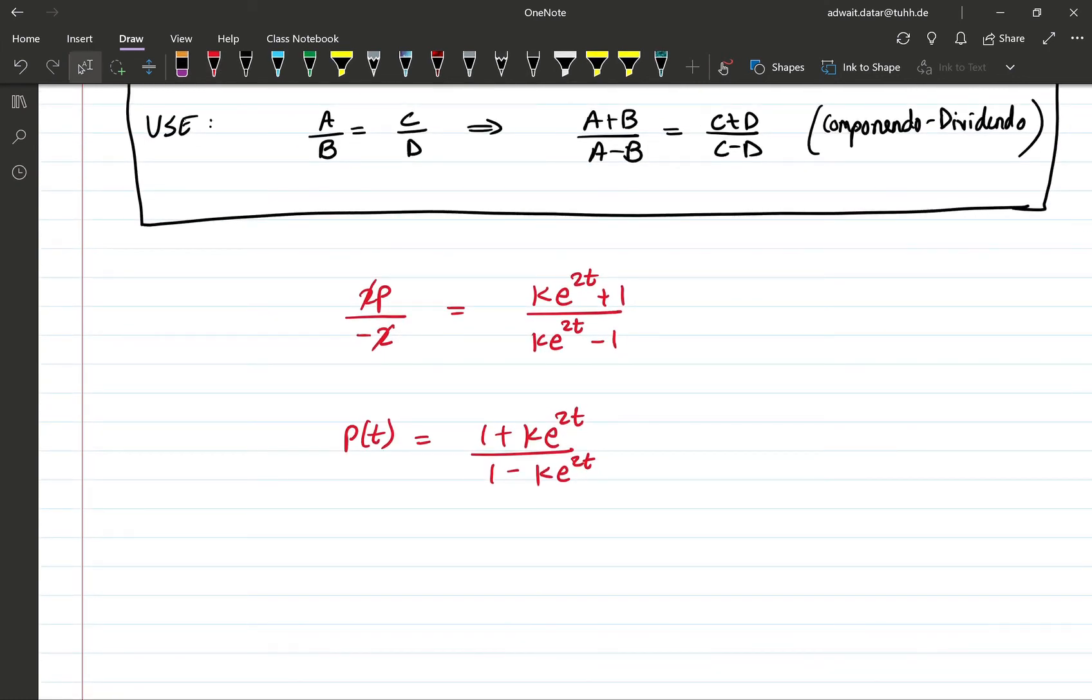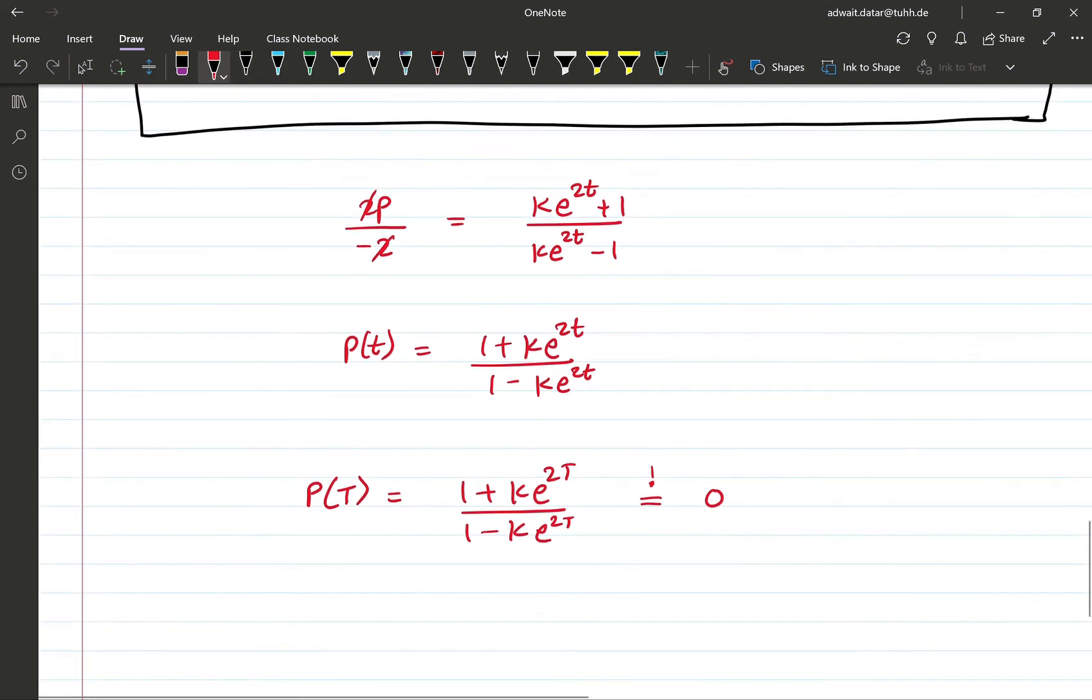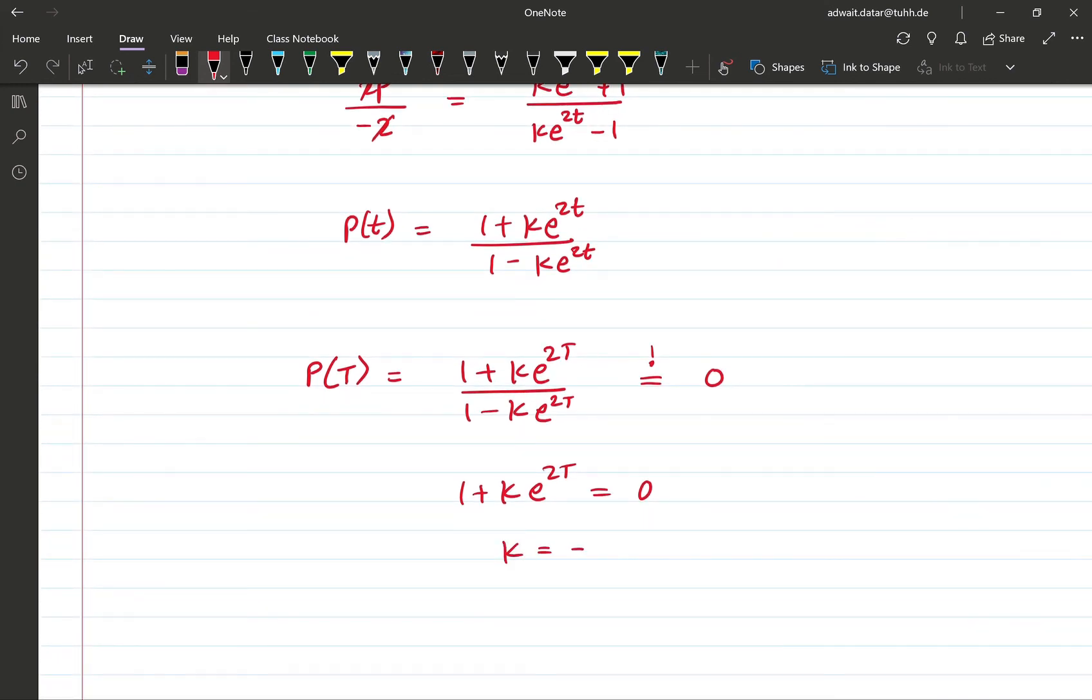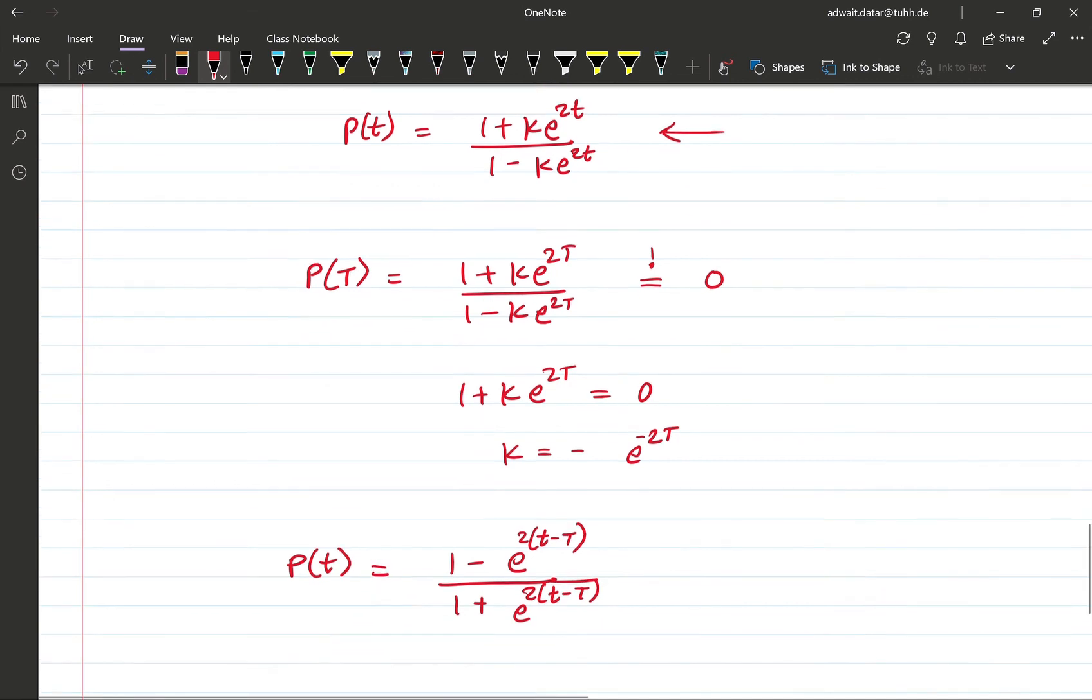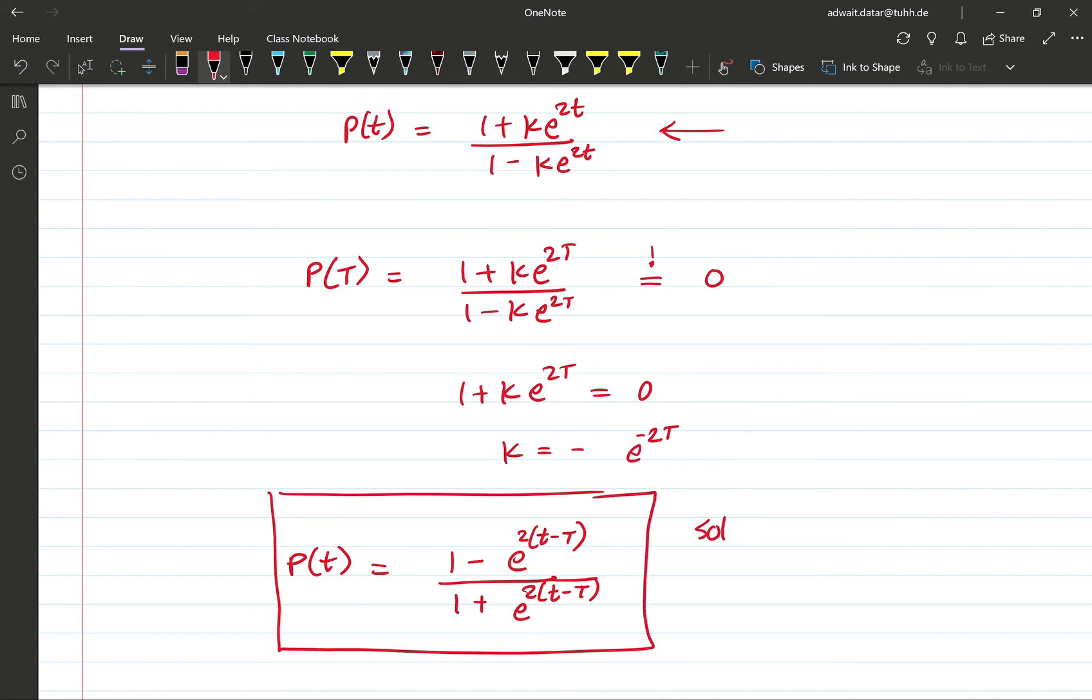Now we haven't yet used the boundary condition. Let's use that now to get the value of K. P at T should be equal to 0. Therefore we have 1 + Ke^(2T) should be 0, so K should be -e^(-2T). Putting this back in the equation we obtain P(t) equal to (1 - e^(2(t-T)))/(1 + e^(2(t-T))). So we now have a complete solution to the Riccati differential equation.